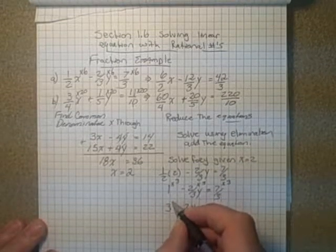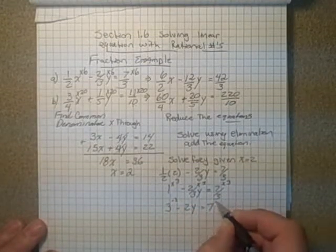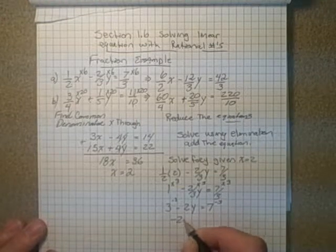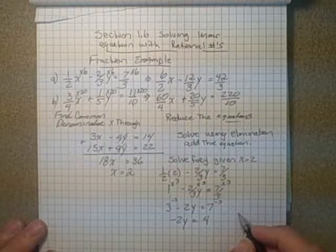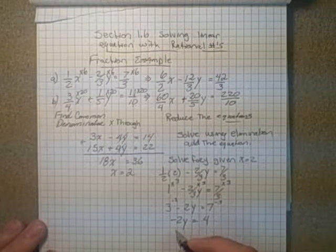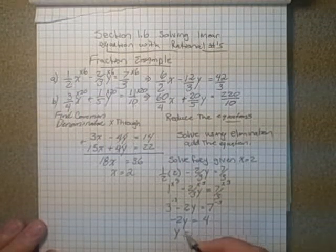Solve for this. Add 3 to both, or sorry, subtract 3 to both sides. Negative 2y is equal to 4. Divide by negative 2, and we get y is equal to negative 2.